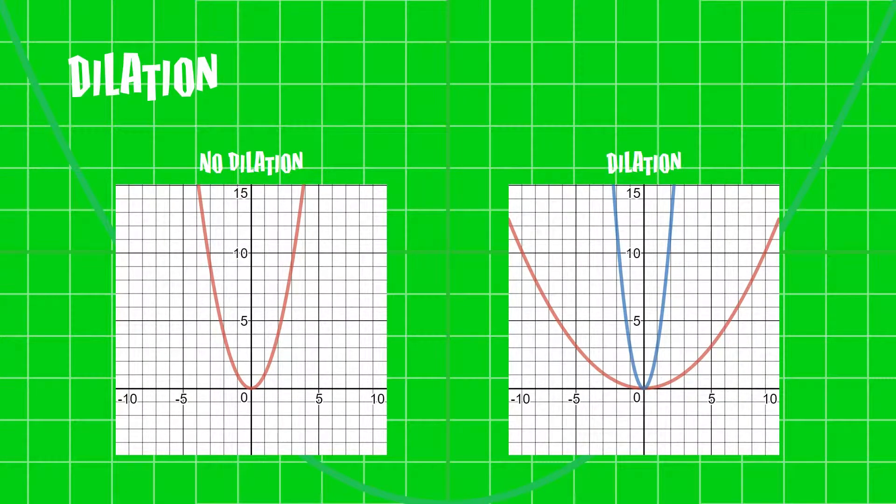Dilation is the narrowing and widening of a quadratic. This is simply just the a-value in our ax² + bx + c form of a quadratic. We write: the graph of y = x² has gone through a dilation of a factor a from the x-axis.